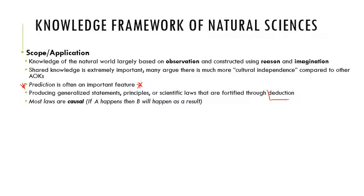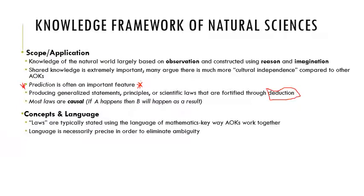Generally, natural sciences produce generalized statements, principles, or scientific laws fortified through deduction. Deduction is especially important in natural sciences — one could argue induction is a little more important in human sciences. Most laws are causal: if A happens, then B will happen as a result, so there's a lot of independent and dependent variables in the methodology. In terms of language, laws are typically stated using the language of mathematics — you've probably seen the importance of math in your science classes, and that's a key way areas of knowledge work together.